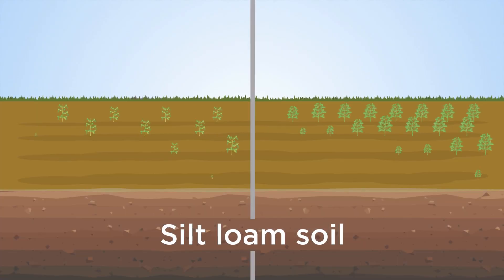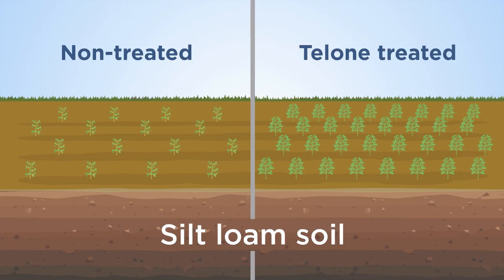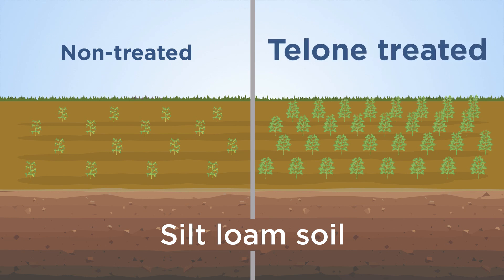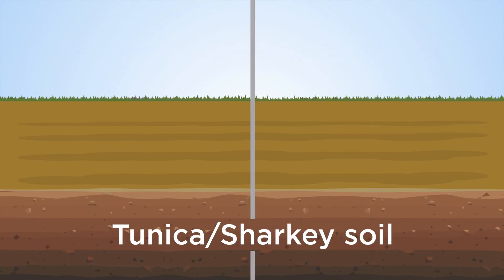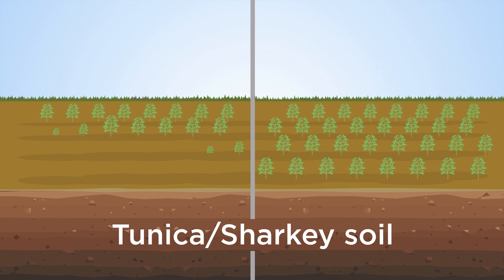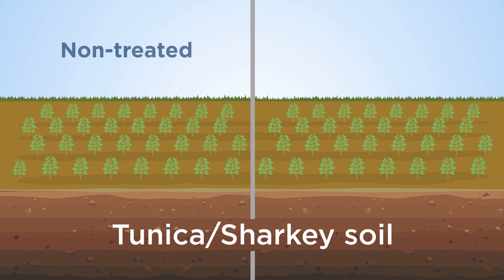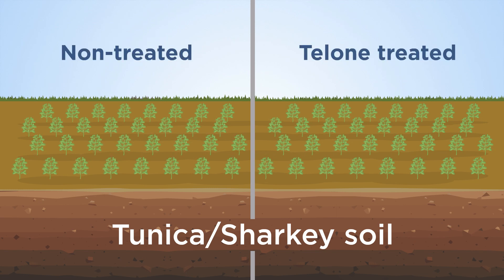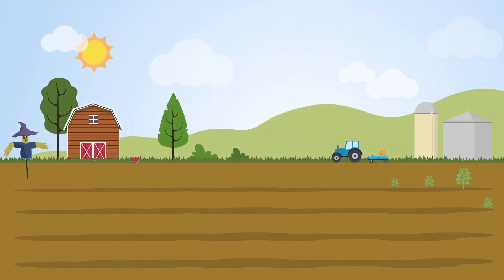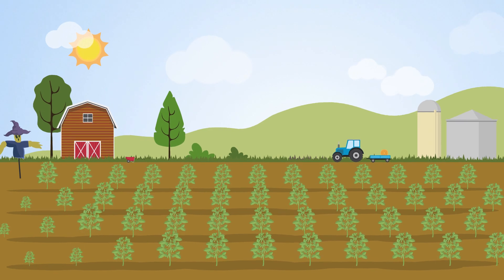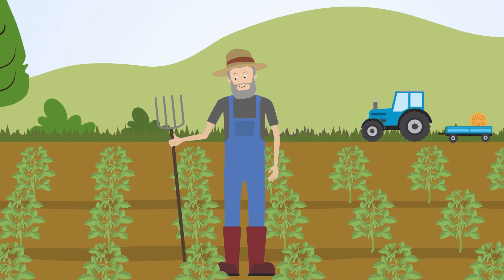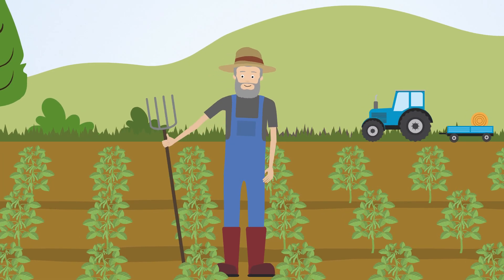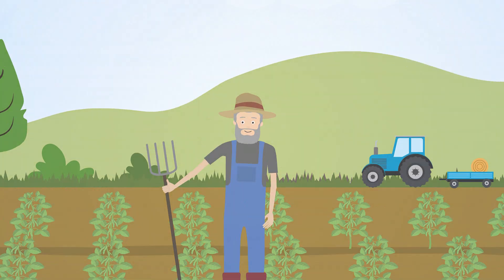Results indicated that in areas where soil textures favored root-knot nematodes, Telone treatment significantly improved soybean yield. However, nematicide application did not affect yield where soil type did not favor the nematode. Therefore, site-specific applications of Telone can be used to control root-knot nematode and maintain high soybean yield.